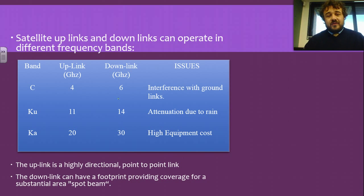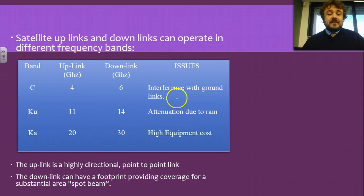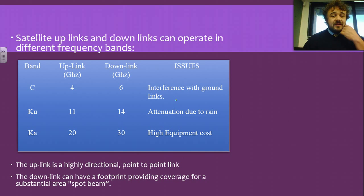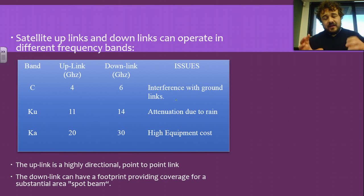Here are the issues with each band. The KA band has high equipment costs — it's expensive to run. The C band dishes are really large, so they interfere with stuff on the ground. Whereas the smaller KU band dishes attenuate due to rain. So KA is ideal, of course, but it is prohibitively expensive.